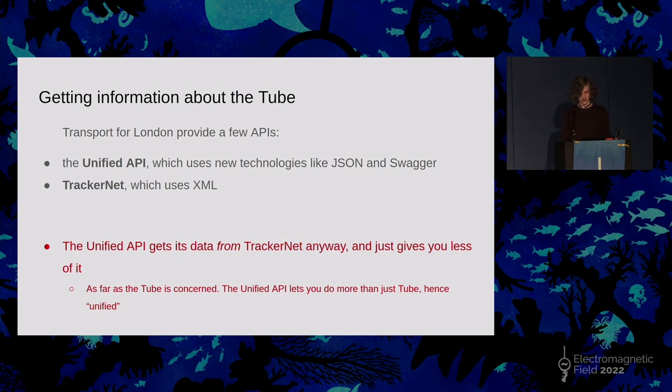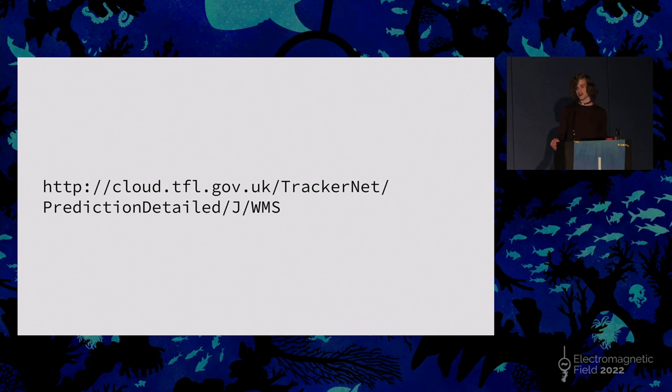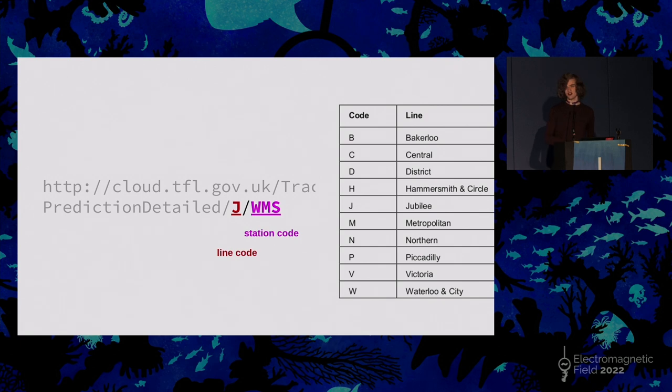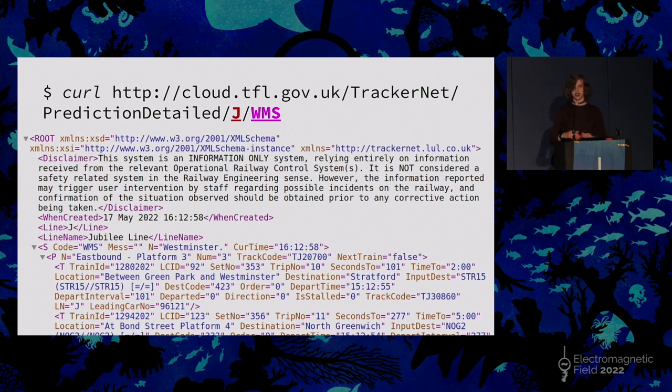There are two here, the Unified API and TrackerNet. From a first glance, it might seem like the Unified API might be a better idea. It uses nice modern technologies like JSON and Swagger, whereas TrackerNet uses XML. If you go and look at the PDFs for TrackerNet, you have this lovely document with pages and pages of stuff that is still marked as a draft despite being last updated in 2010. But despite this, it turns out that the Unified API gets its data from TrackerNet anyway and then just gives you less of it. So I ended up using TrackerNet and having to parse lots of XML. This is what using TrackerNet looks like. You put together a URL that looks like this. This asks for TrackerNet's view of a particular station in detailed mode.